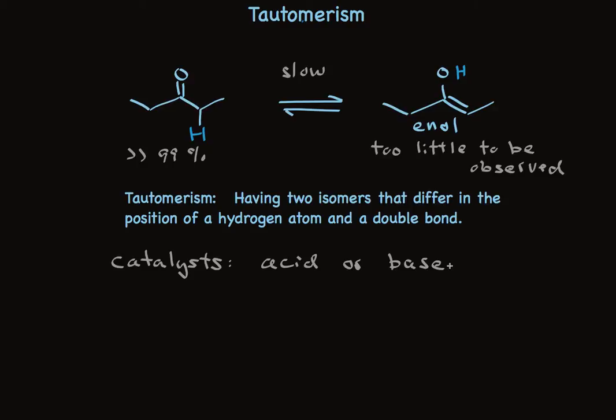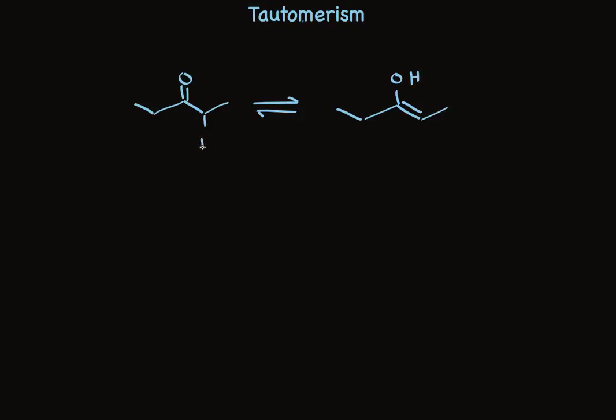First, let's look at base catalysis. In the presence of base, the alpha hydrogen of a carbonyl compound is removed. This is a reversible process. Arrow pushing shows us using a pair of electrons from the base, and this pair of electrons through the proton stays with carbon. We call this structure an enolate and it has two resonance forms.